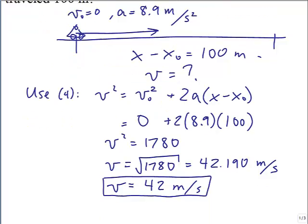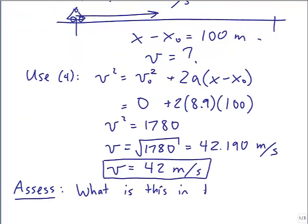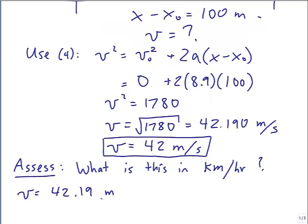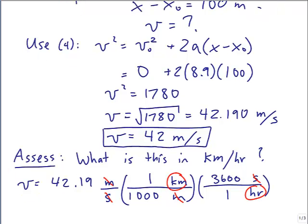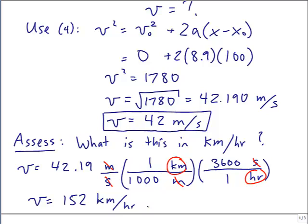Let's check if that makes sense by converting to kilometers per hour. 42 meters per second times (1 km/1,000 m) times (3,600 s/1 hr) — meters cancel, seconds cancel — gives 152 kilometers per hour. That's very fast, but it's a Ducati motorcycle, so it's not absurdly fast. The answer seems reasonable.